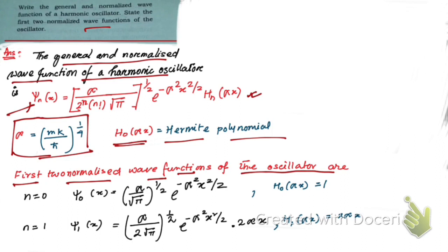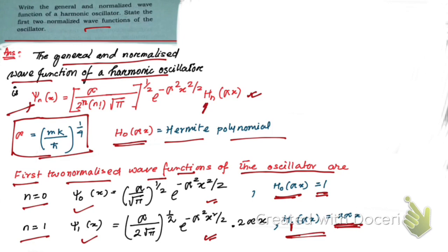To find the first two normalized wave functions of the oscillator, put n = 0 and n = 1. When n = 0, H₀ = 1, and when n = 1, H₁(αx) = 2αx. We have used these values to determine ψ₀ and ψ₁ from the general expression.